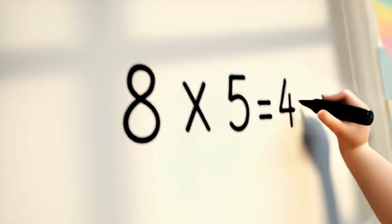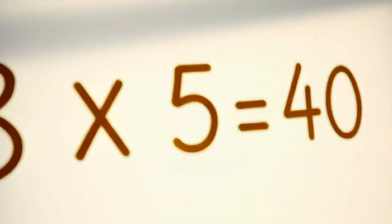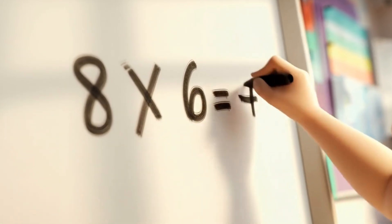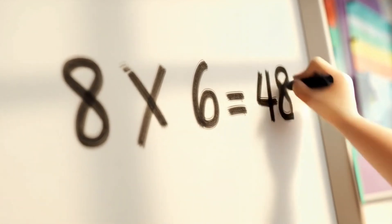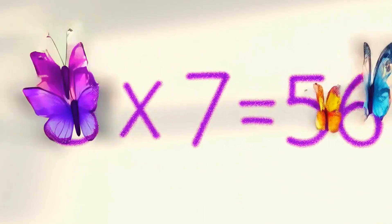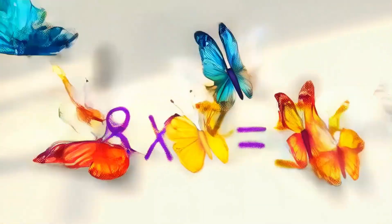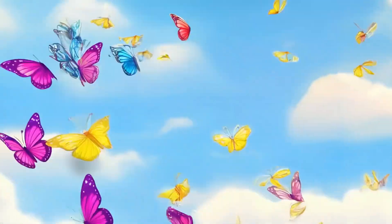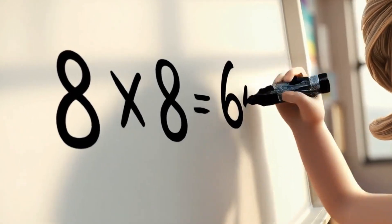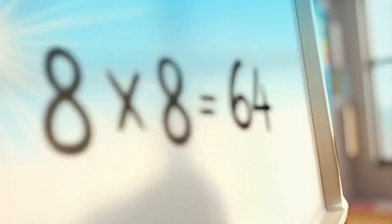8 times 5 is 40, 40 little lights shine so pretty. 8 times 6 is 48, 48 birds chirp at the gate. 8 times 7 is 56, 56 butterflies flutter quick. 8 times 8 is 64, 64 flowers bloom galore.